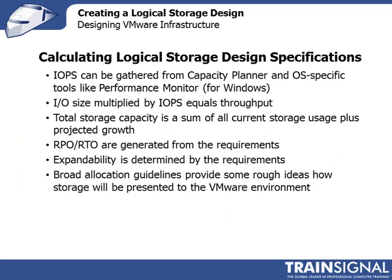For example, you can use Capacity Planner to get the total number of IOPS across all assessed systems, or use Performance Monitor on Windows to determine how many IOPS a particular Windows instance is generating. You also need to know the IO size, because larger IO sizes generally have an adverse impact on IOPS — the larger the IO size, the fewer IOPS a drive can generate. And IO size multiplied by IOPS gives you your total throughput.